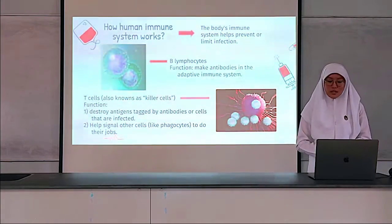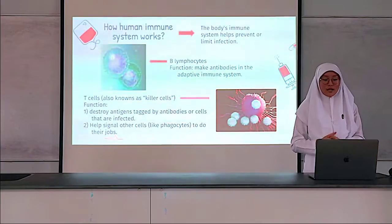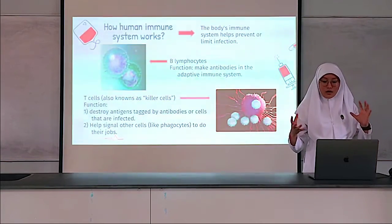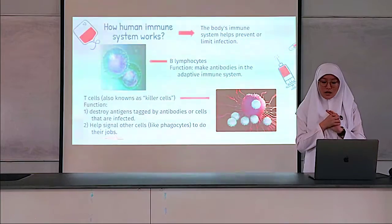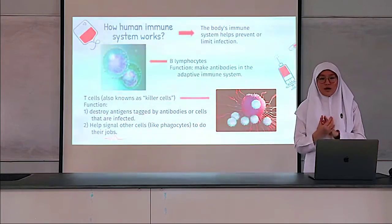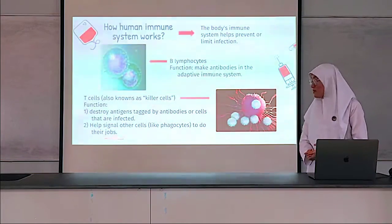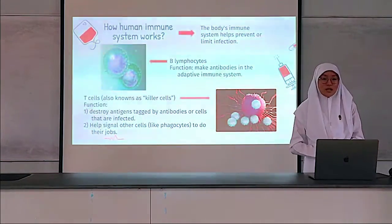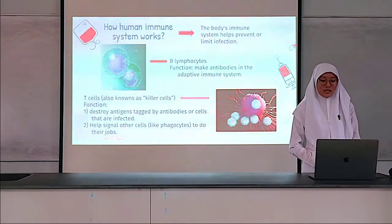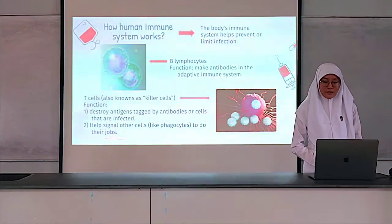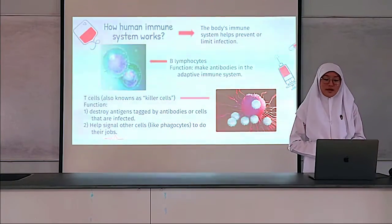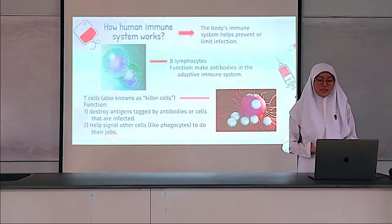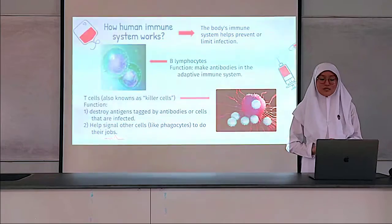Although antibodies can recognize an antigen and lock onto it, they can't destroy it without another cell's help. That is when T cells come in. T cells are also known as killer cells. T cells destroy antigens tagged by antibodies or cells that are infected. They also signal other cells like phagocytes to do their jobs.